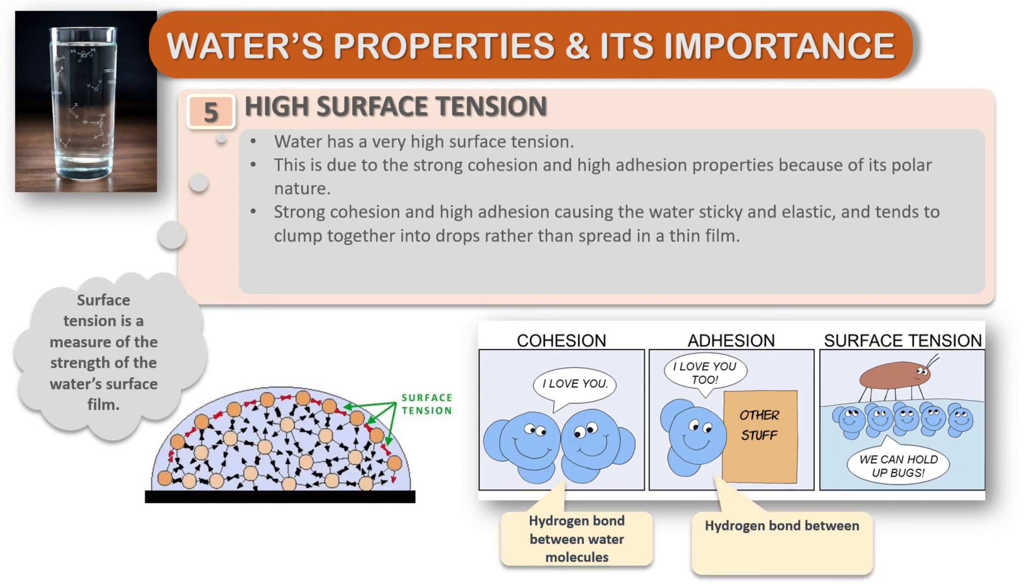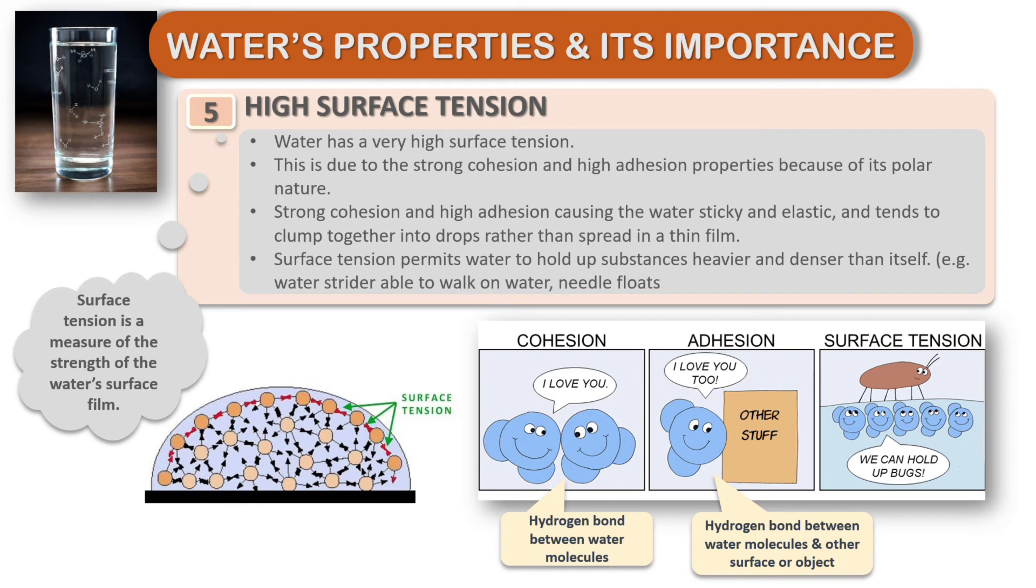In cohesion, hydrogen bonds form between water molecules. In adhesion, hydrogen bonds form between water molecules and other surfaces or objects. Surface tension permits water to hold up substances heavier and denser than itself. For example, water striders are able to walk on water and needles float on water.